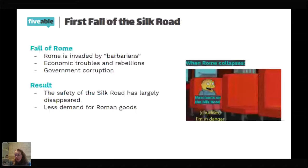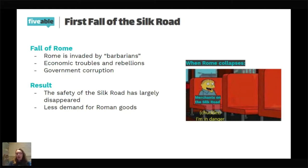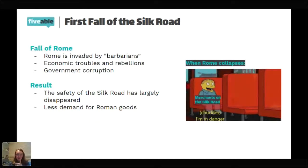Now let's talk about the first fall of the Silk Road. The fall of Rome was caused by invasions, economic issues, rebellions, and a government so corrupt that society couldn't function. When Rome fell, there was a power vacuum — no central power took over, so nobody was really instigating merchant trips, and the safety of the Silk Road just disappeared. There wasn't as much demand for Roman goods in foreign empires, and once Rome collapsed, you saw the rise of bandits all over the Silk Road who could easily raid people and take their money.